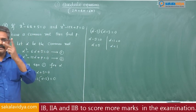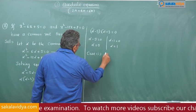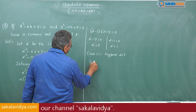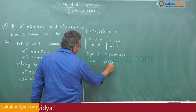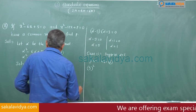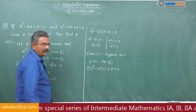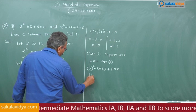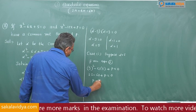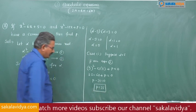Case 1: suppose alpha is equal to 5. Substituting alpha equals 5 into equation 2: 5 squared minus 12 into 5 plus p is equal to 0. So 25 minus 60 plus p is equal to 0, giving p minus 35 is equal to 0, therefore p is equal to 35. One of the values of p is 35.